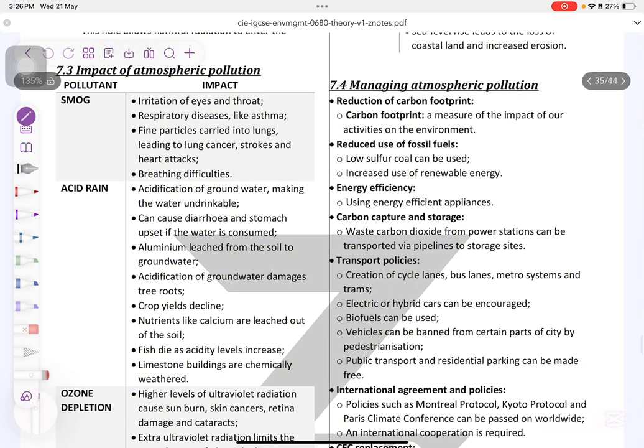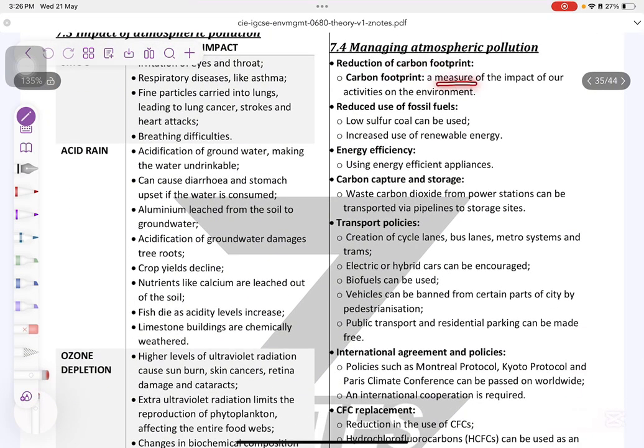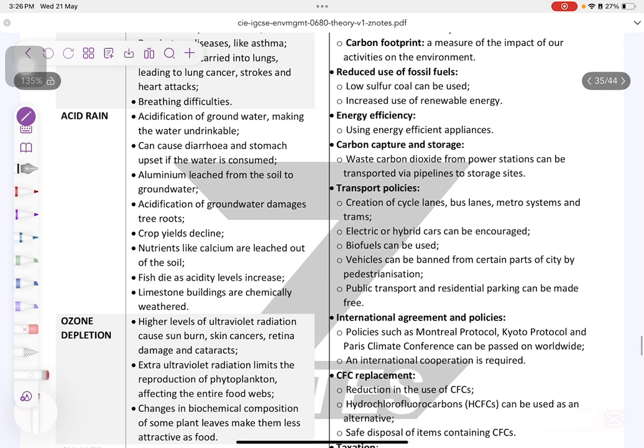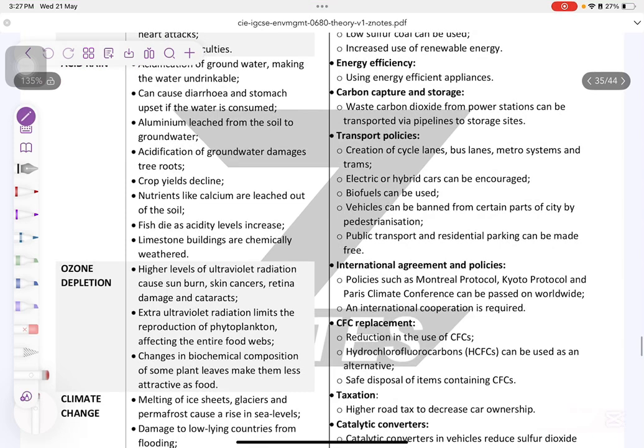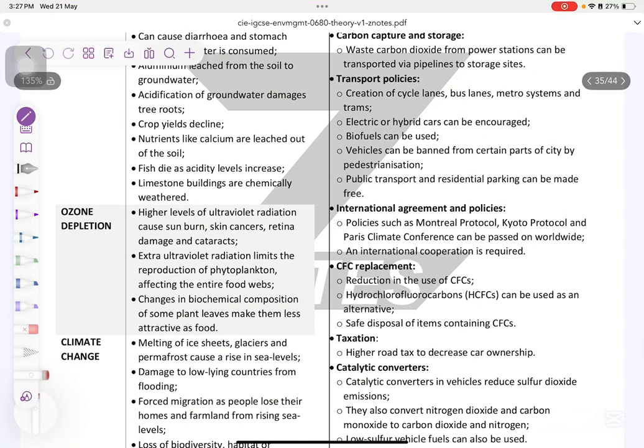Managing atmospheric pollution. Reduction of carbon footprint. Carbon footprint is a measure of the impact of our activities in the environment, like keeping track of how many carbons you release by your appliances that you get, by the burning, by the combustion. Reduced use of fossil fuels. Low sulfur coal can be used, increase in renewable resources. Energy efficiency: using more energy efficient appliances. Carbon capture and storage: waste carbon dioxide from power station can be stored via pipelines to storage sites.